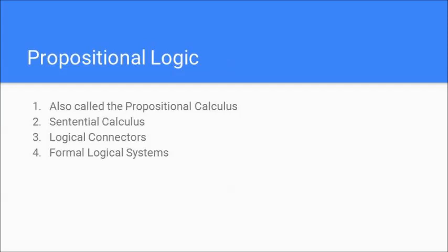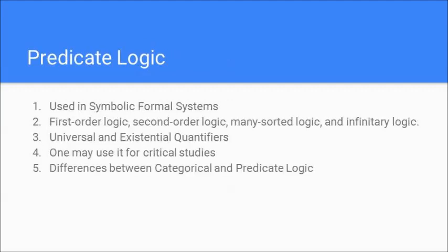The next one is predicate logic, which is used in symbolic formal systems, and later on this has also been divided into or classified into many areas like first order logic, second order logic, many sorted logic, and infinitary logic also. Here we would be getting introduced to what I call the universal and the existential quantifiers, and one may use it even for critical studies or critical thinking or critical reasoning. Then we will have to understand how to differentiate between categorical and predicate logic also side by side, and once you understand, you have taken care of it.